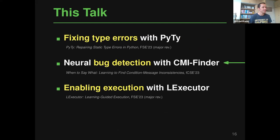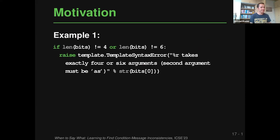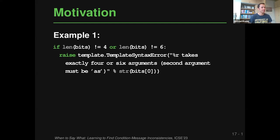Moving on to neural bug detection. Here's an example with a bug — one of those nasty bugs where people stare at it and don't see it because your brain auto-corrects the problem.